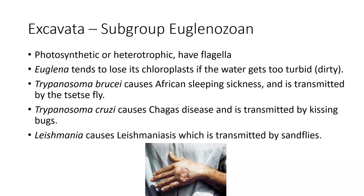The two trypanosomes I'm giving you cause two different diseases, though they look pretty similar under the microscope. Trypanosoma brucei is what causes African sleeping sickness — it's called that because the person gets very tired as their red blood cells are killed off, then they fall asleep and never wake up. Trypanosoma cruzi causes Chagas disease, which we do see here in Texas, which is why I wanted to spend a little time talking about it.